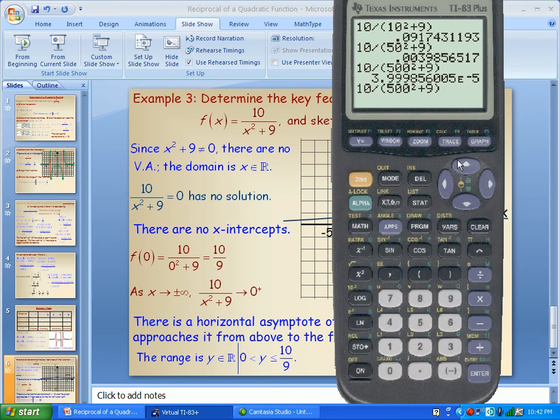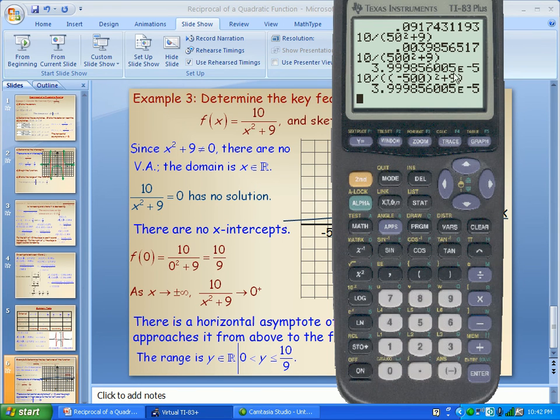This actually is in scientific notation. And if I do the same thing, except make this negative 500, notice it's exactly the same value. See if I square 500 or negative 500, I still get the same value. And so both of these, as it approaches infinity or negative infinity, they're both approaching zero from above.